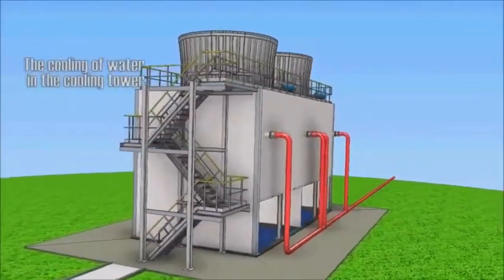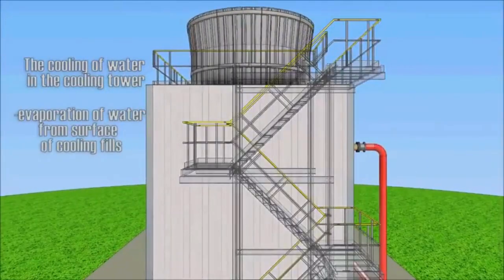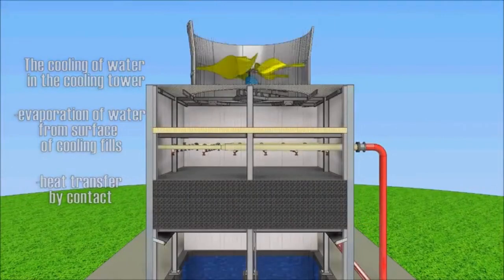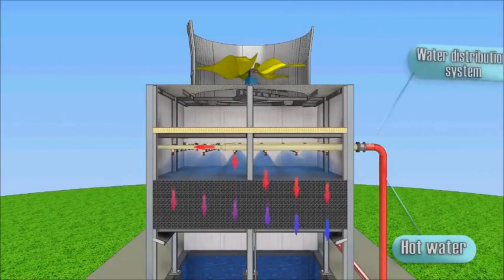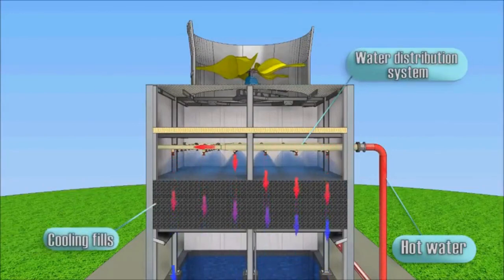Water in cooling towers is cooled by evaporation of water in the stream of atmospheric air. Hot water from various sources such as machines or heating processes flows through pipes to the distribution system of the cooling tower, which produces even water distribution to all the area of fills by the spray nozzles.